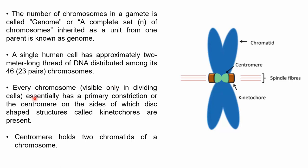Every chromosome visible only in dividing cells has a primary constriction known as the centromere, on either side of which disc-shaped structures called kinetochores are present. The centromere holds the two chromatids of a chromosome — during cell division, sister chromatids form and the centromere holds both chromatid one and chromatid two together.